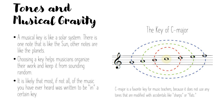A musical key is kind of like a solar system. There's one note that's like the Sun and the other notes are like the planets rotating around it. Choosing a key helps musicians organize their work and keep it from sounding random. It's likely that most if not all of the music you've ever heard has been written to be in a particular key.